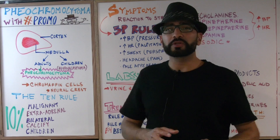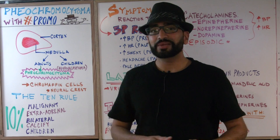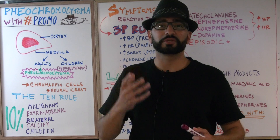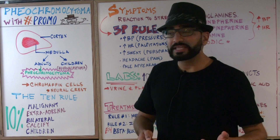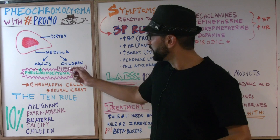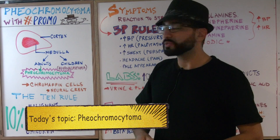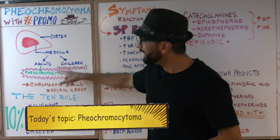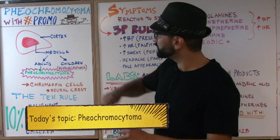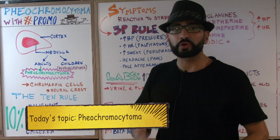So the adrenal medulla — what do you want to know? You want to know the pathology. What can go wrong in the adrenal medulla? The main thing you want to know for the USMLE is that tumors can arise in the adrenal medulla. Now, if it's a child, the most common tumor they will develop is called neuroblastoma, which we will discuss in next week's lecture. But for today, we're going to talk about the most common tumor that arises in the adrenal medulla for adults, referred to as pheochromocytoma.